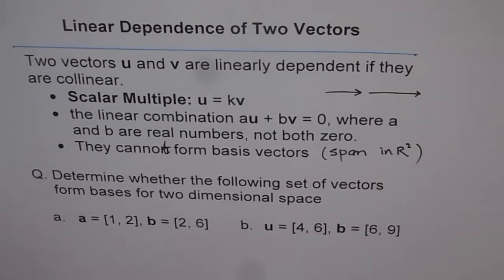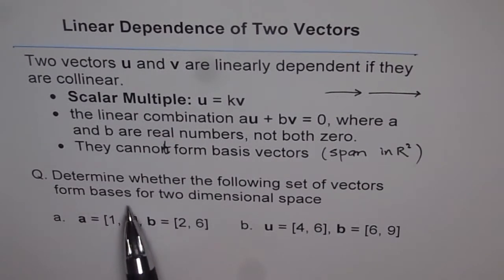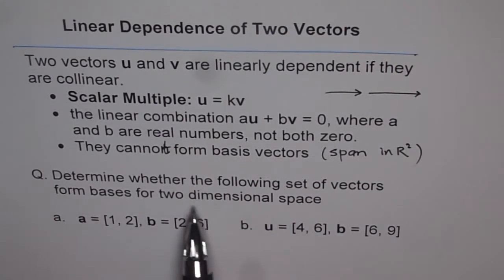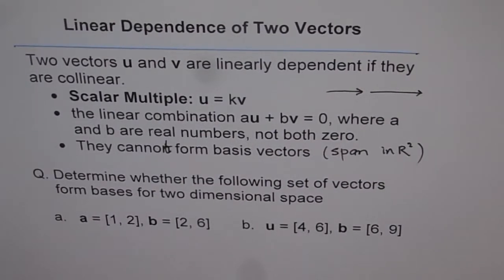Now we have a question: determine whether the following set of vectors form a basis for a two-dimensional space. If the vectors form a basis for two-dimensional space, they should not be collinear. If they are collinear, they can only span vectors in their own direction, not any other direction. So our test is to check whether the vectors are collinear or not.